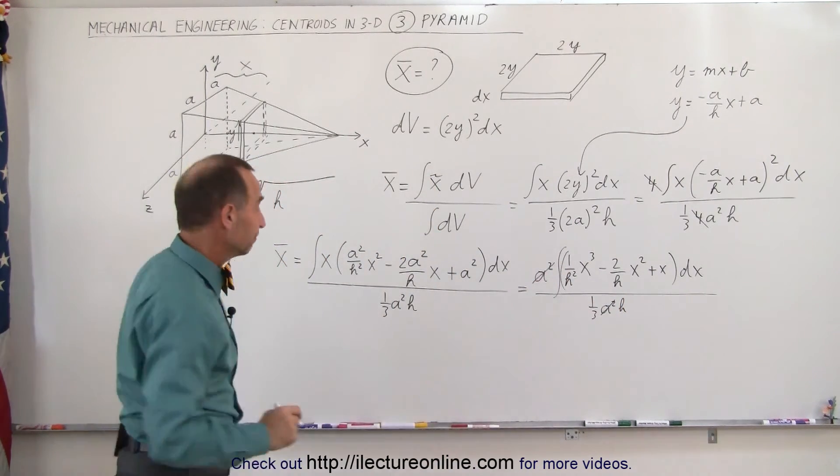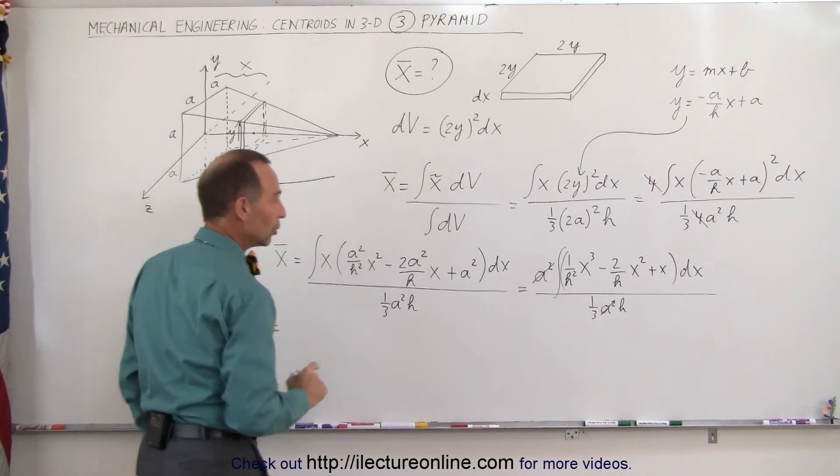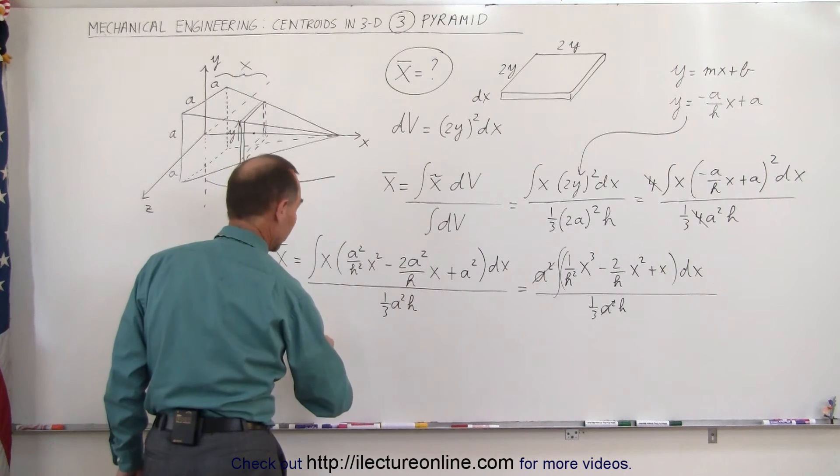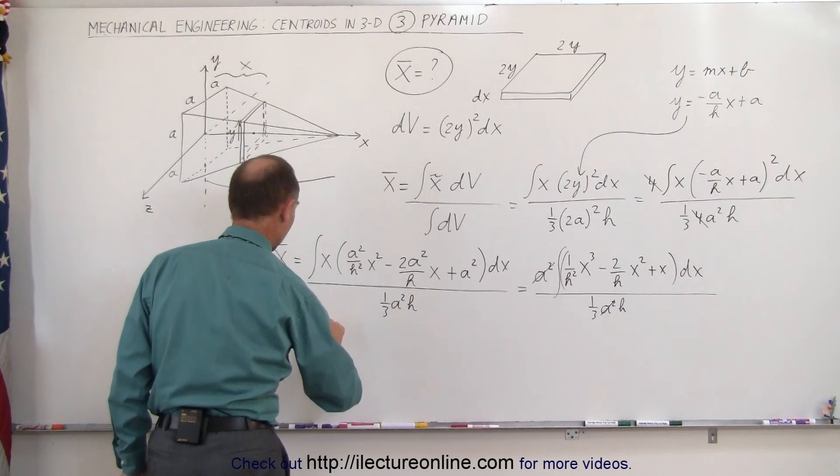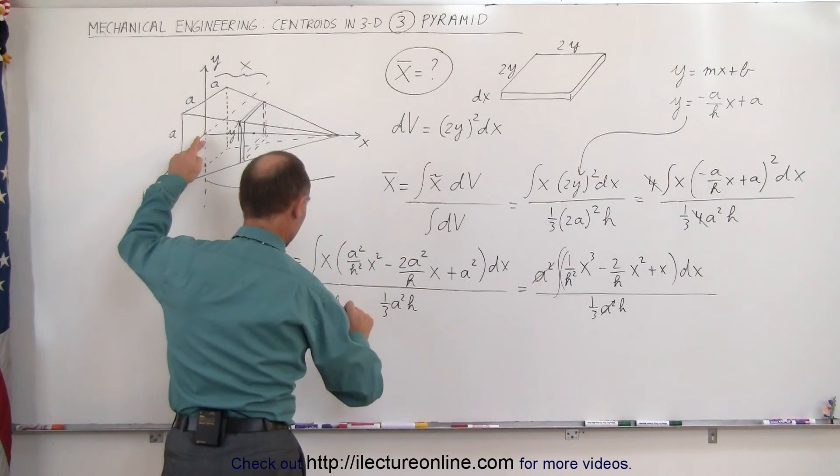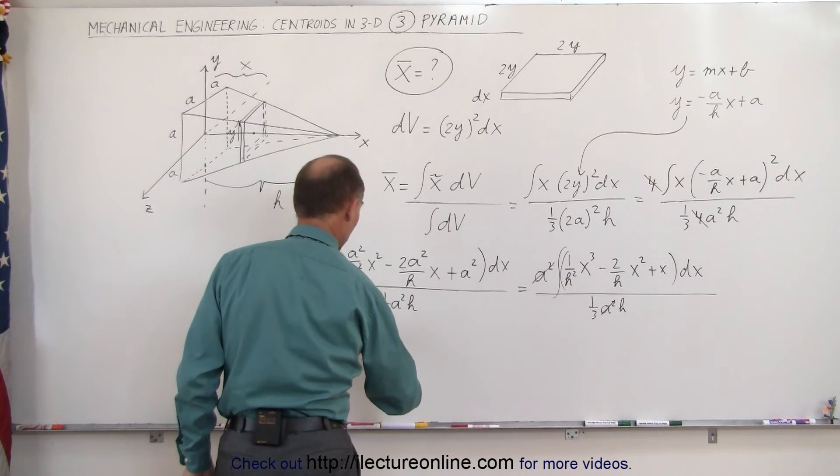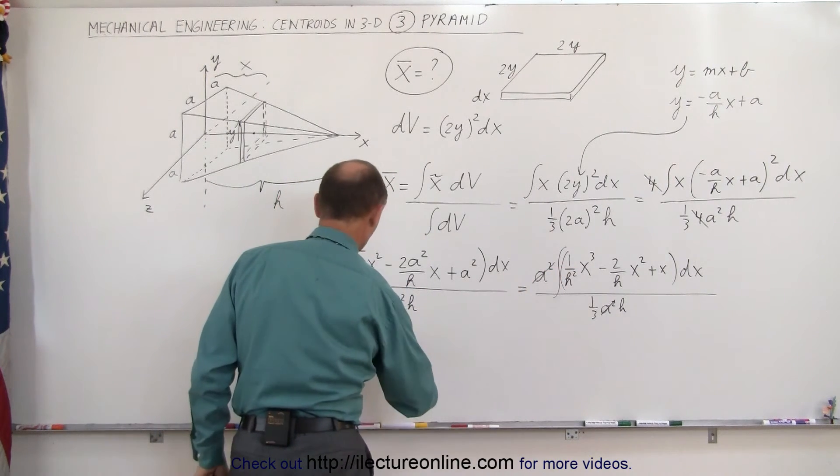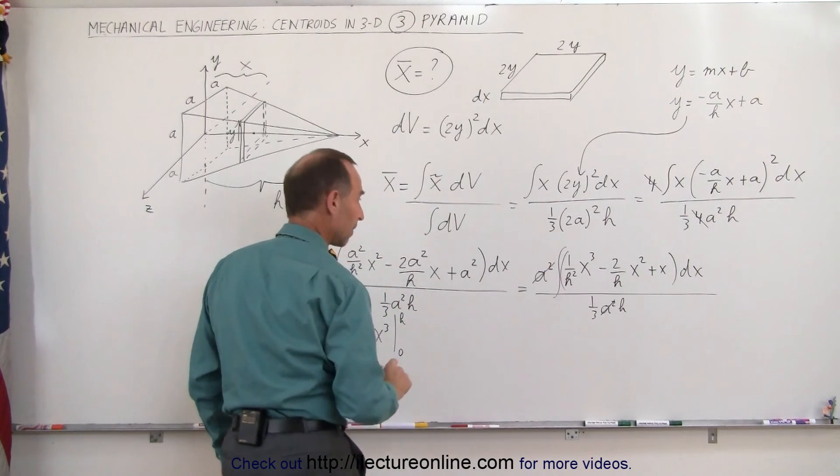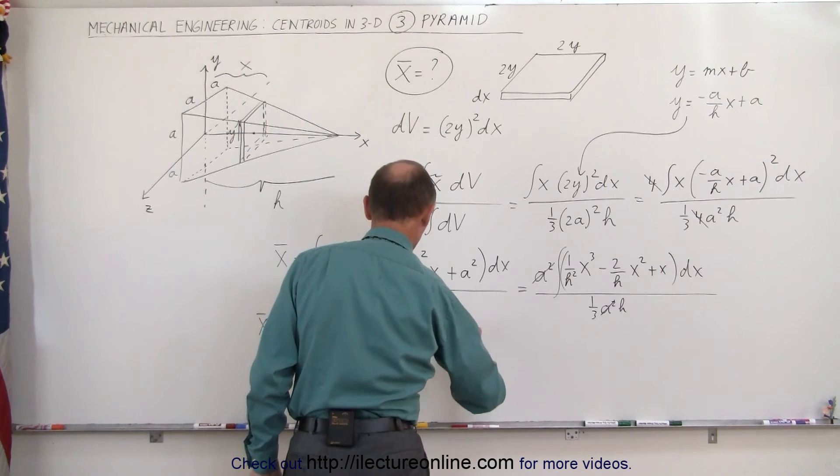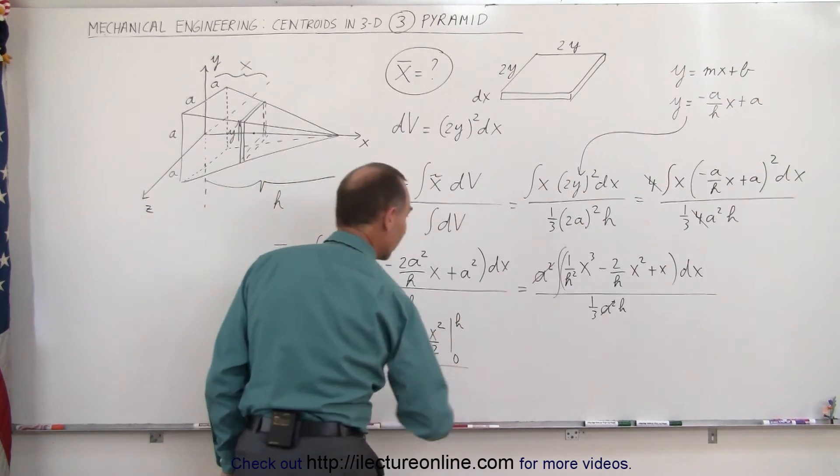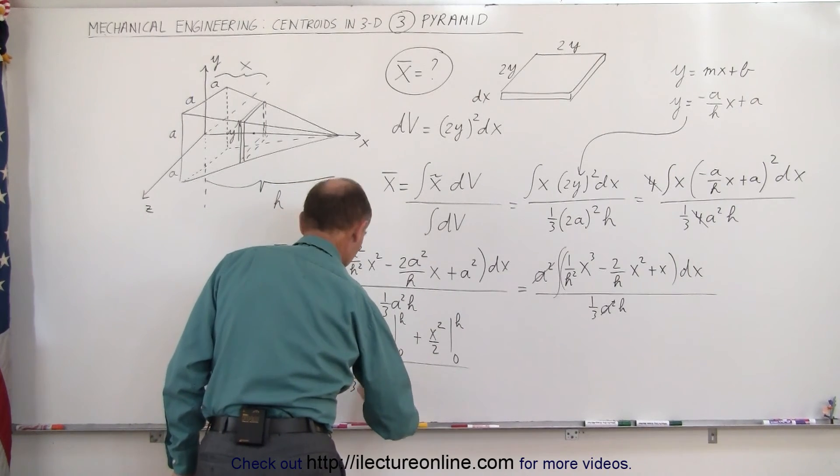Now we can integrate. The x-coordinate of the centroid is equal to integrating the first one, we get 1 over 4 h squared times x to the fourth evaluated from 0 to h, minus 2 over 3 h times x cubed evaluated from 0 to h, plus x squared over 2 evaluated from 0 to h, the whole thing divided by one-third h.